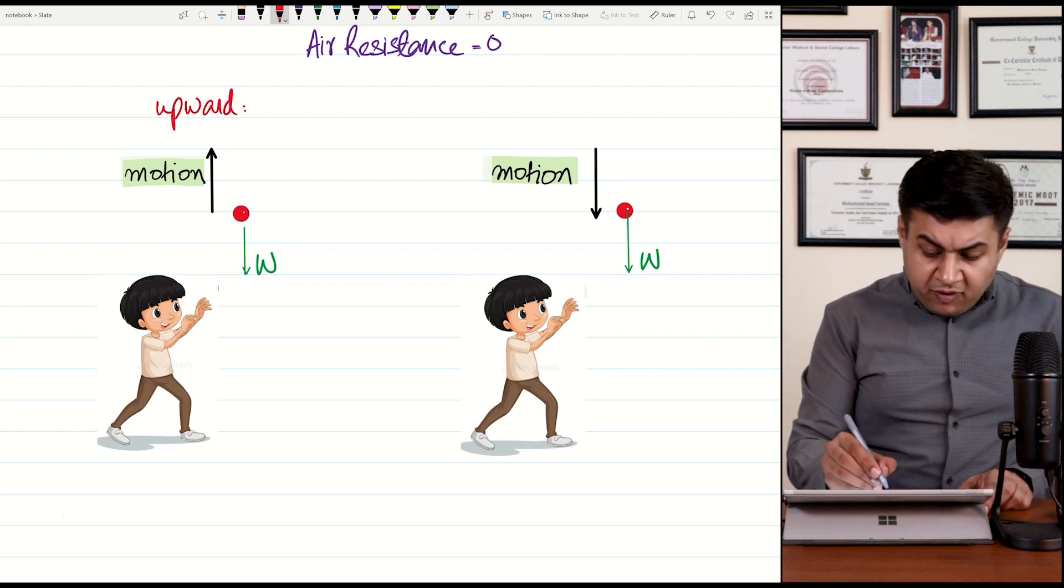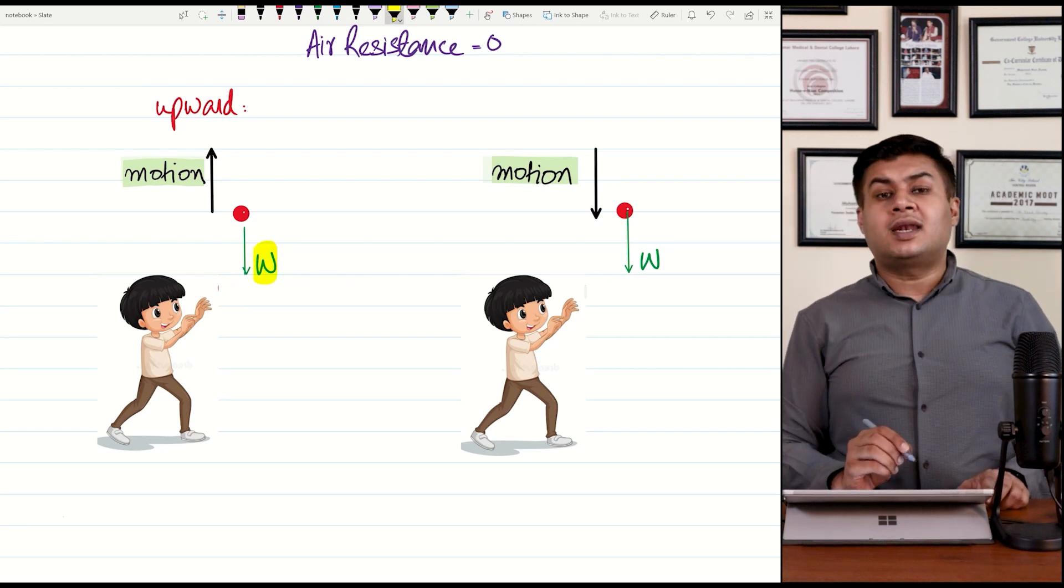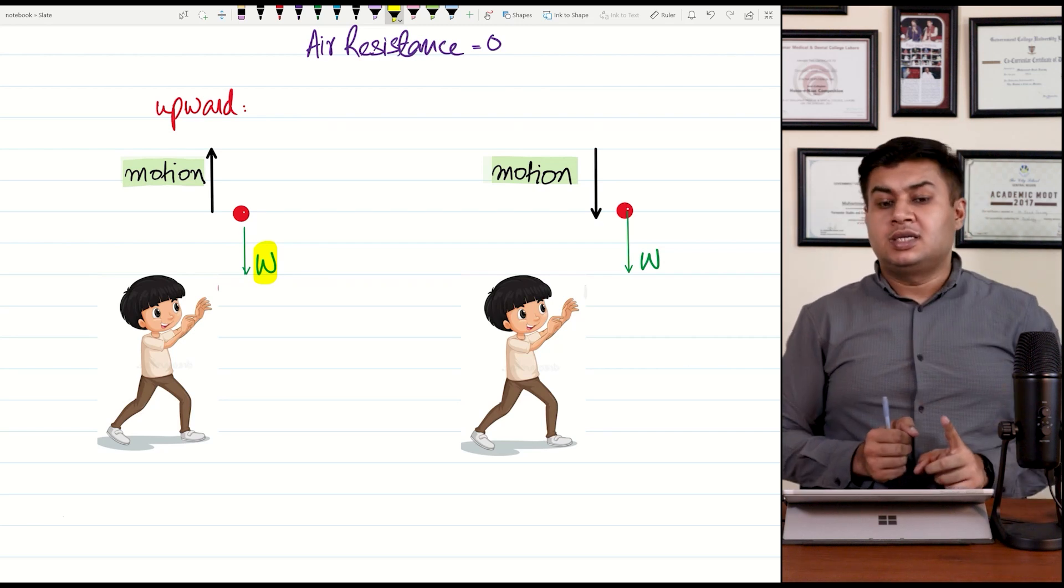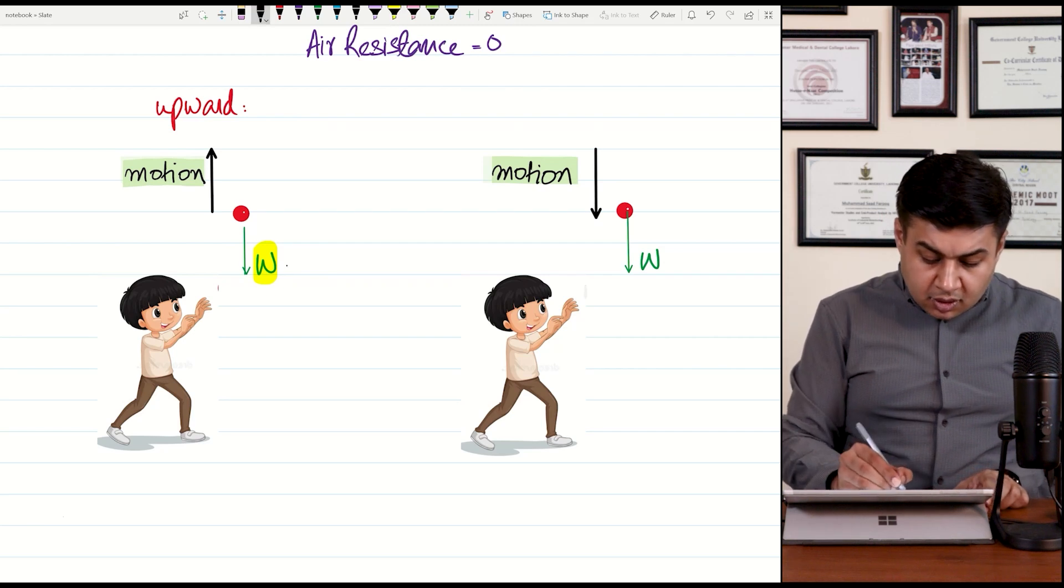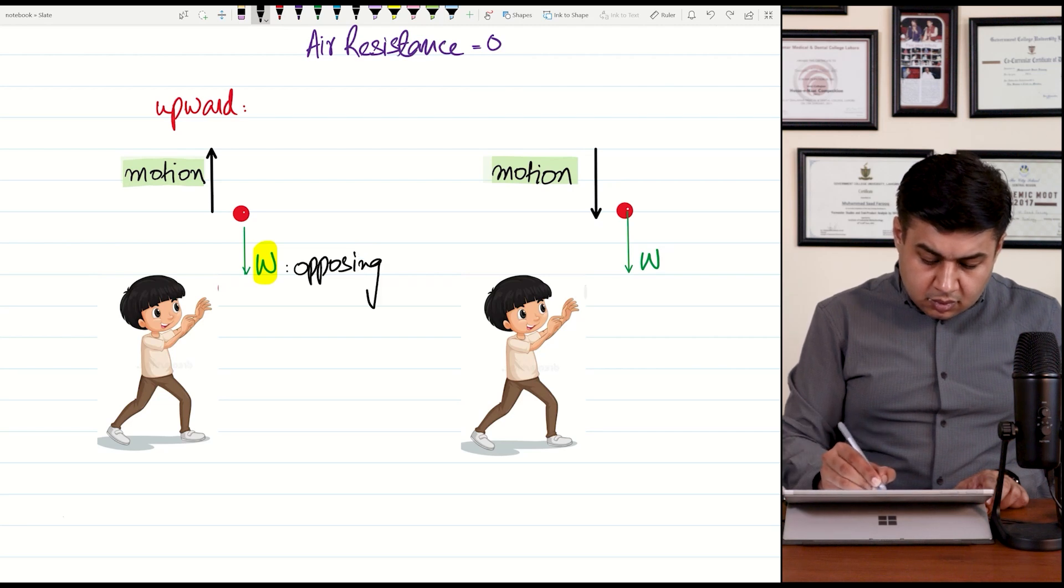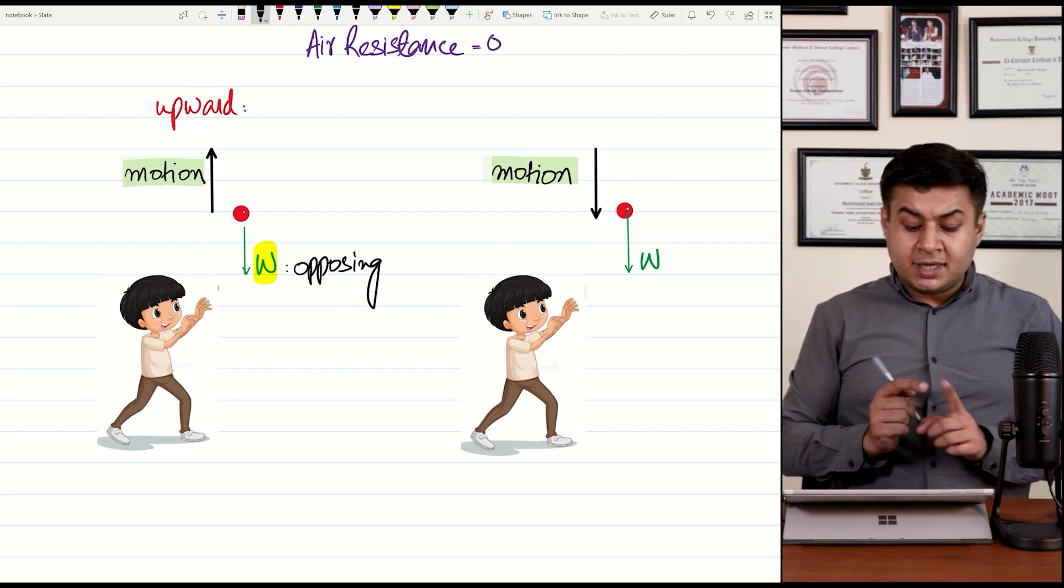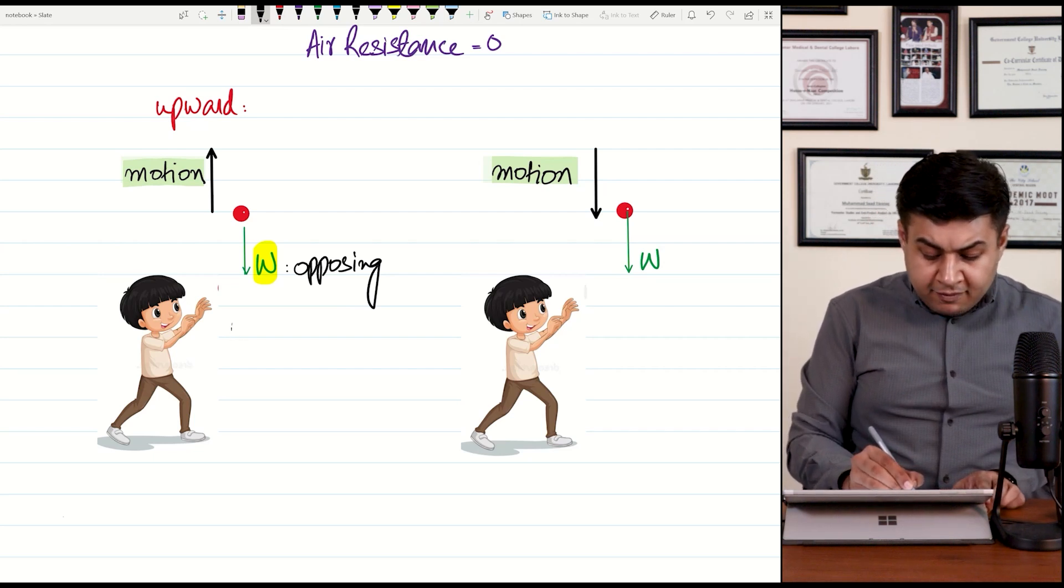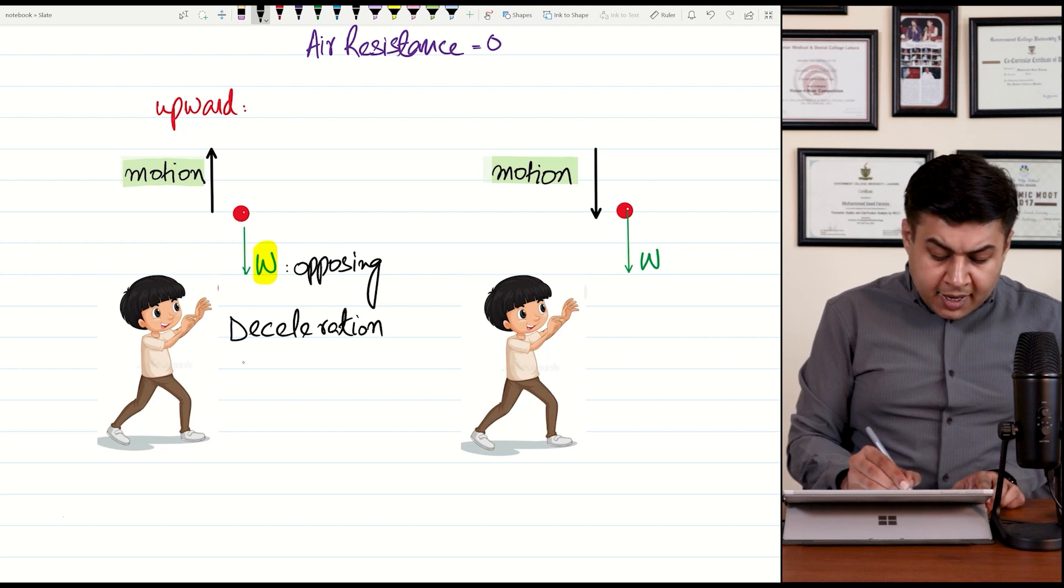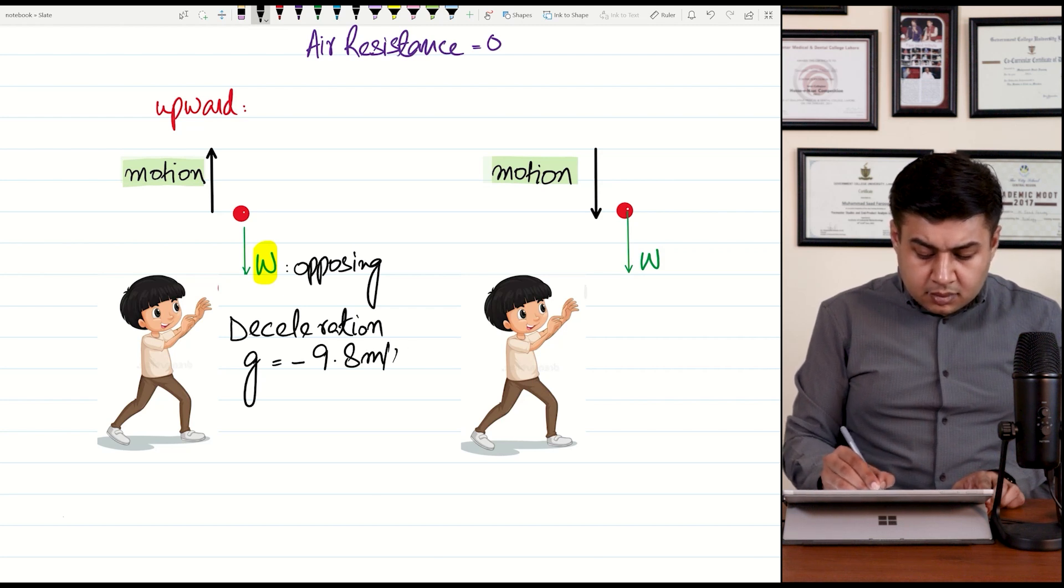Weight is acting vertically downwards, irrespective of direction of motion because Earth's gravitational force apni taraf hi lagati hai. Thik hai? So, let's discuss this upward motion. Upward motion mein ye weight upward motion ko support kar raha hai ya oppose kar raha hai? Currently, earth's gravity is trying to pull back the ball. Thik hai? So, this weight is opposing motion. Toh, agar opposing force act kar raha hai toh object decelerate kar raha hai. So, this ball will have deceleration. So if you want to remember that the g value will be minus 9.8 meters per second square.